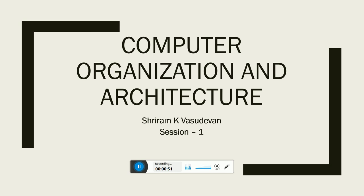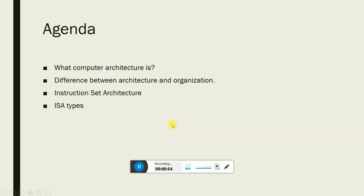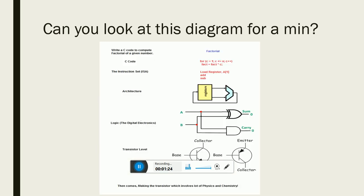The agenda for the first three or four sessions: I'll talk about what computer architecture is all about, the difference between computer architecture and organization, the Instruction Set Architecture (ISA), and ISA types. We'll cover all this, and then we'll go into the deeper MIPS stuff, which is more interesting and fundamentally needed to understand anything related to microprocessors.